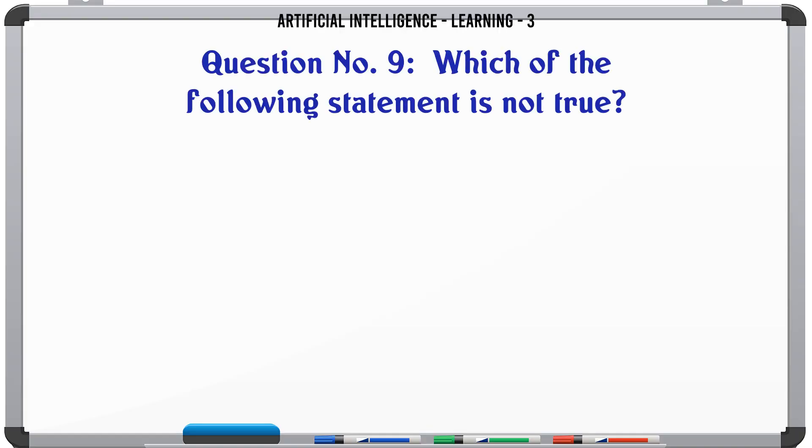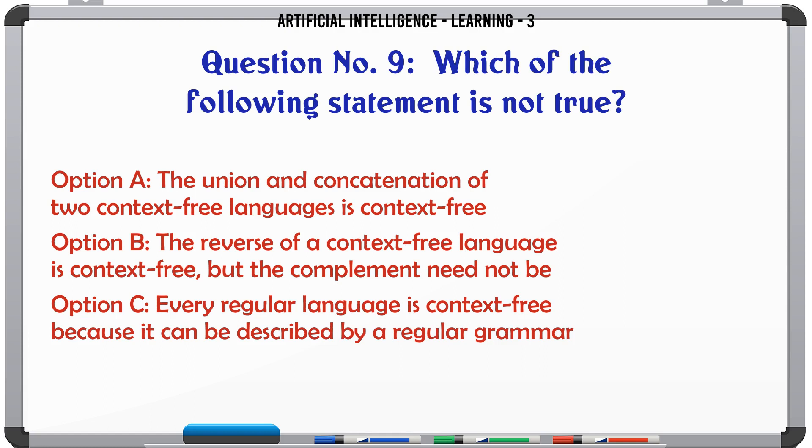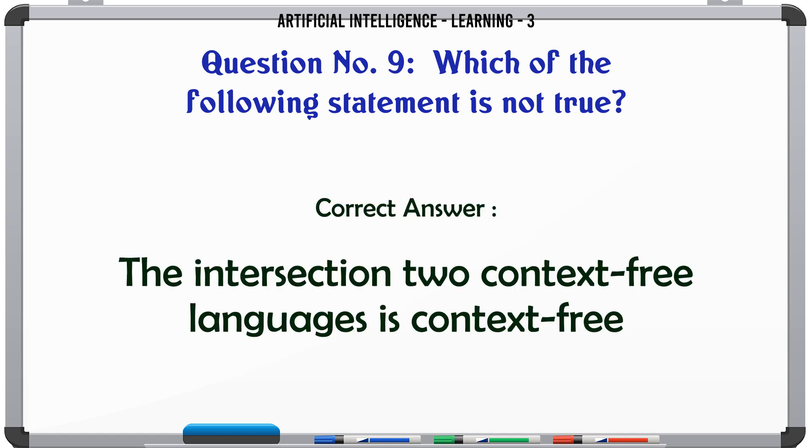Which of the following statement is not true? Option A: The union and concatenation of two context-free languages is context-free. Option B: The reverse of a context-free language is context-free but the complement need not be. Option C: Every regular language is context-free because it can be described by a regular grammar. Option D: The intersection of two context-free languages is context-free. The correct answer is the intersection of two context-free languages is context-free.